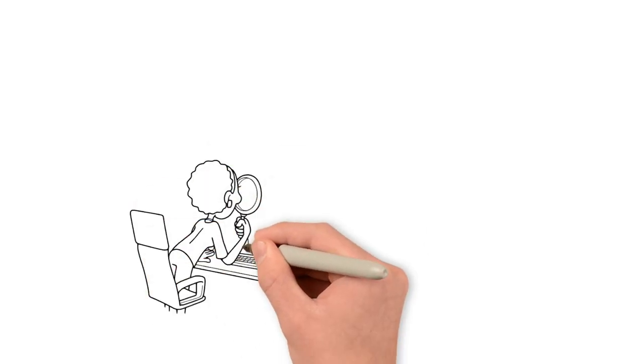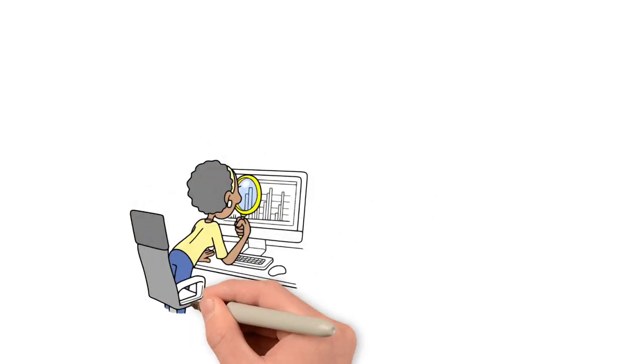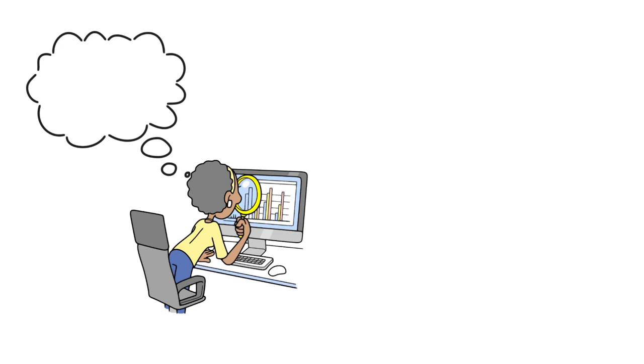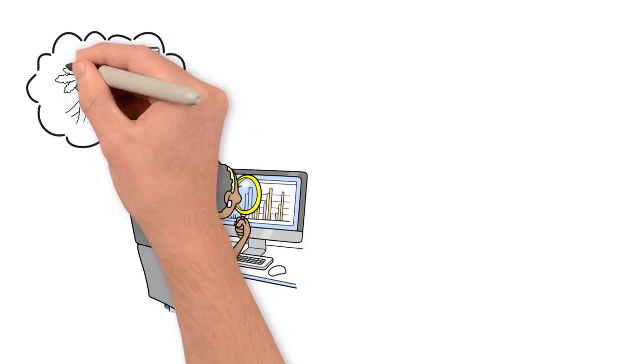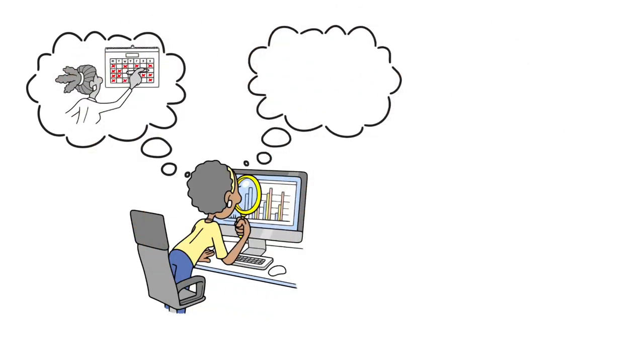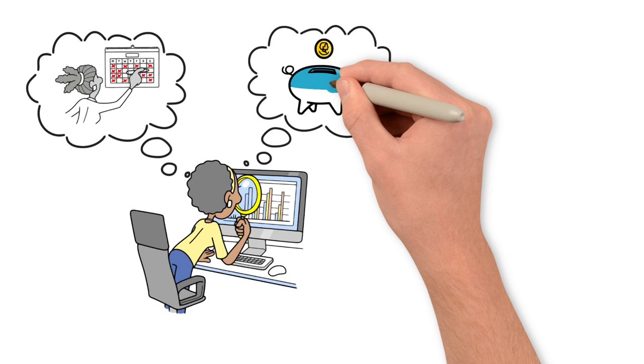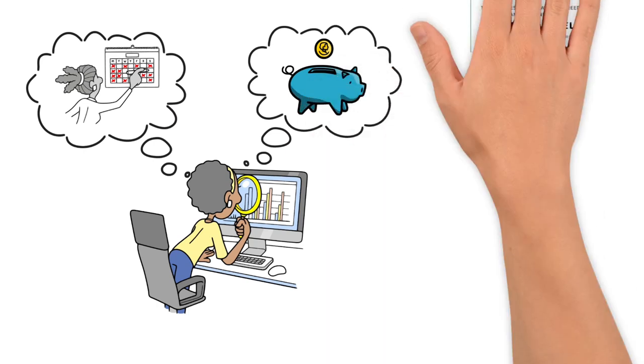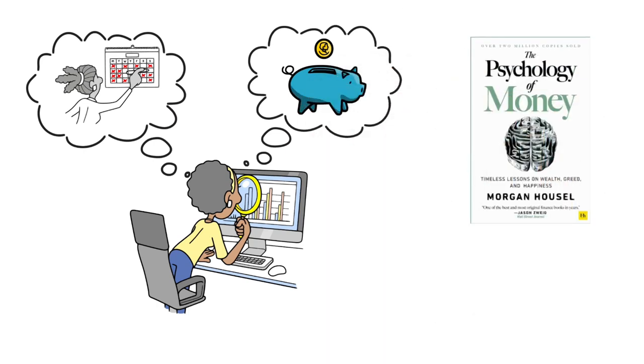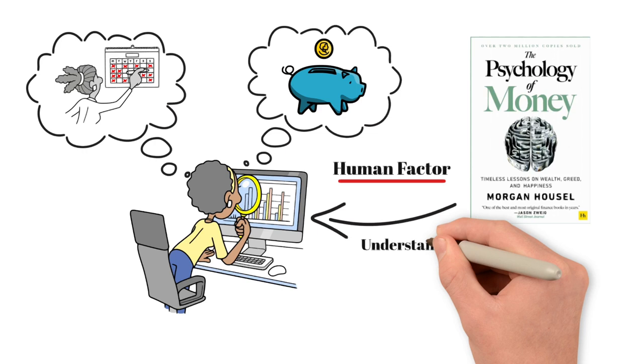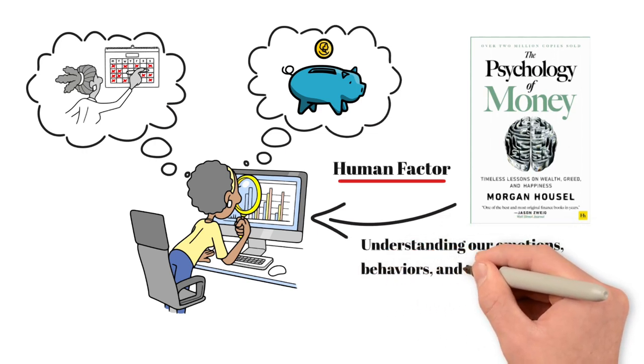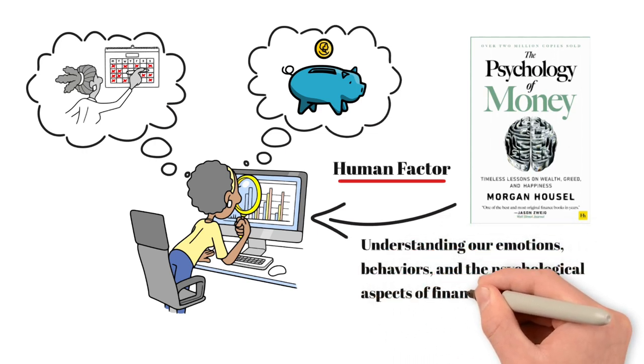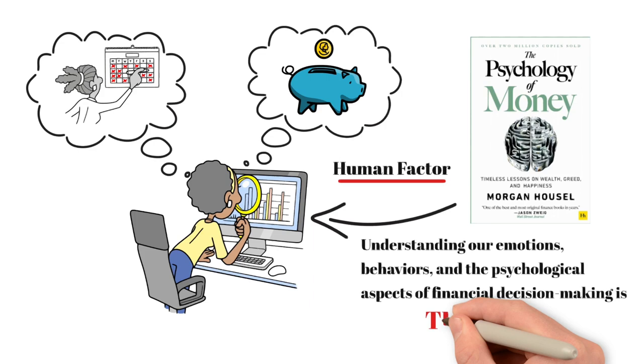When it comes to personal finance, people often focus on the technicalities of the stock market, the right timing for buying or selling assets, and the amount needed for retirement savings. However, Morgan Housel's book, The Psychology of Money, sheds light on a crucial aspect that often gets overlooked: the human factor.